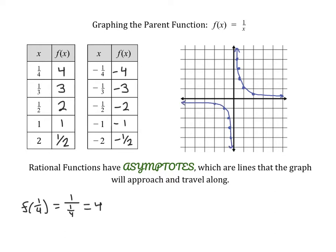As our positive x values get closer and closer to 0, our graph shoots up really, really quickly. And as our positive x values get larger, our graph approaches the x-axis. It curves along your two axes, and the same happens for the negative values.